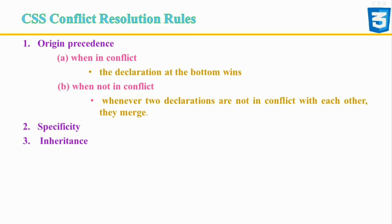When the origin of precedence is not in conflict but there are two different declarations for the same element that focus on different attributes, the styles simply merge and the element displays the properties of both declarations. The cascade and the closely related concept of specificity are the mechanisms that control which rule should be applied when there is a conflict.